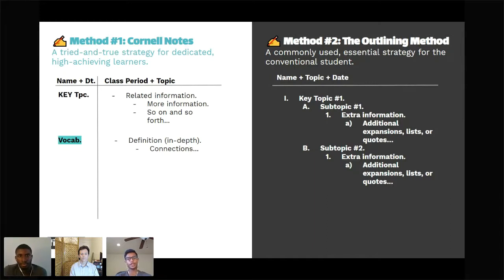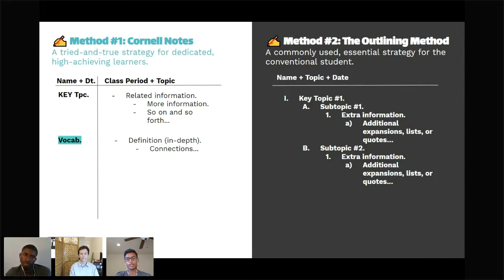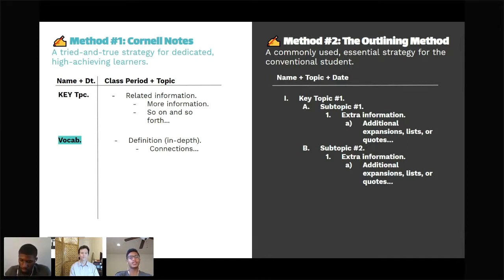It really depends on what kind of lecture you're in. I don't use the Cornell note method every single time — sometimes I just feel like using the outlining method. I don't restrict myself to one thing because it really takes away your ability to focus and gain from these methods if you do. Name, topic, and date will help you so much as you go back, because even with the outlining method, having that info is very essential — I can just flip through and find it in a few minutes.